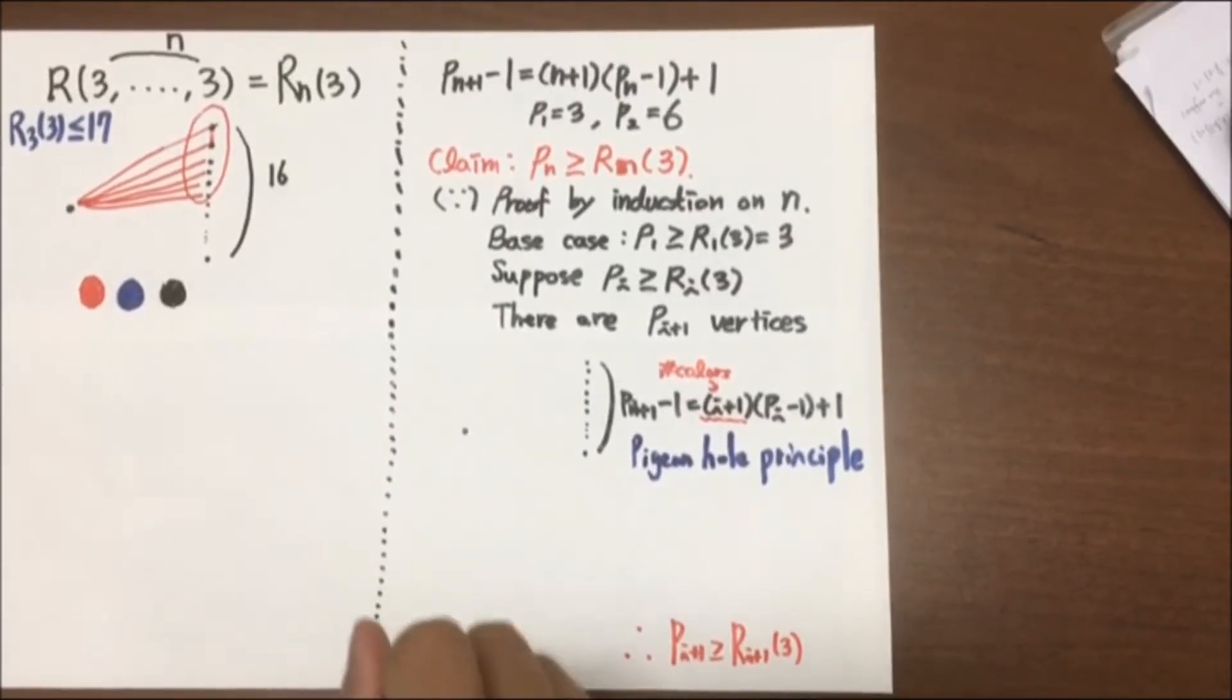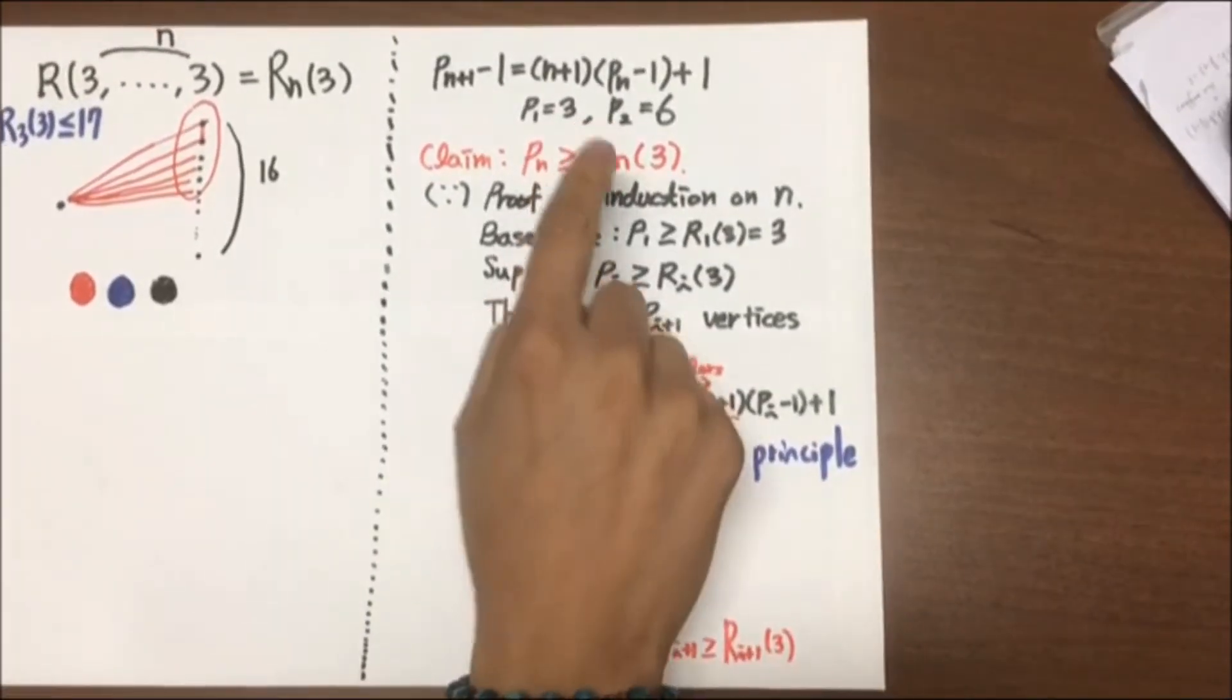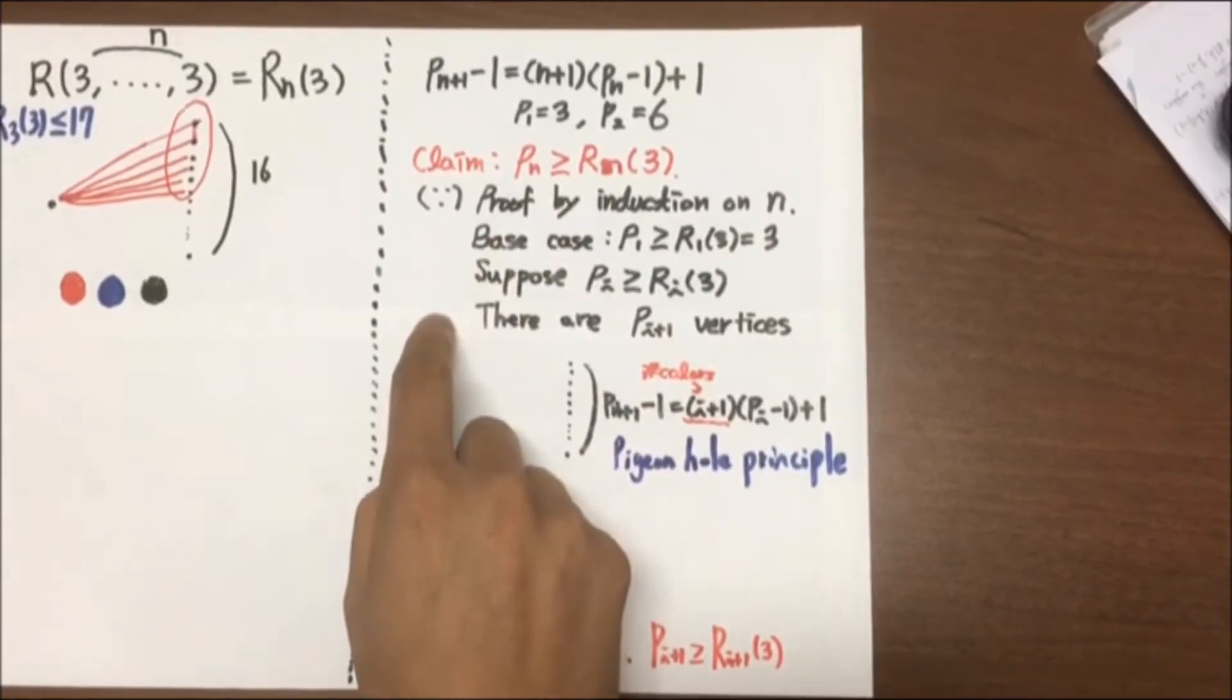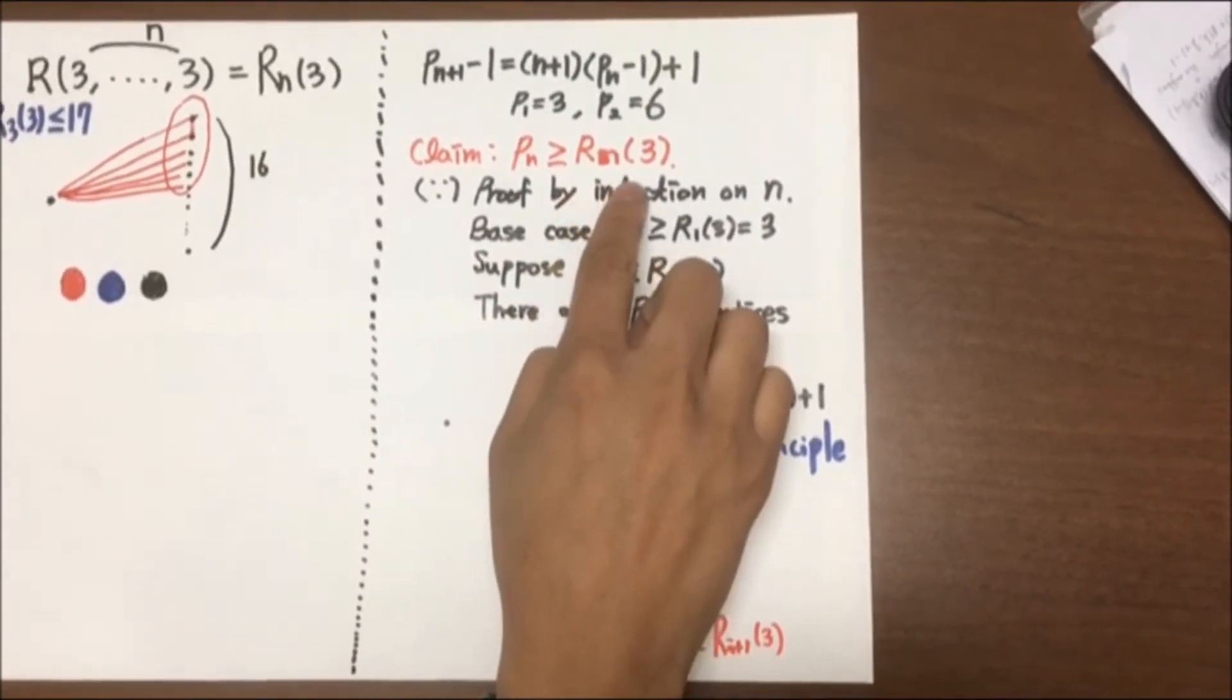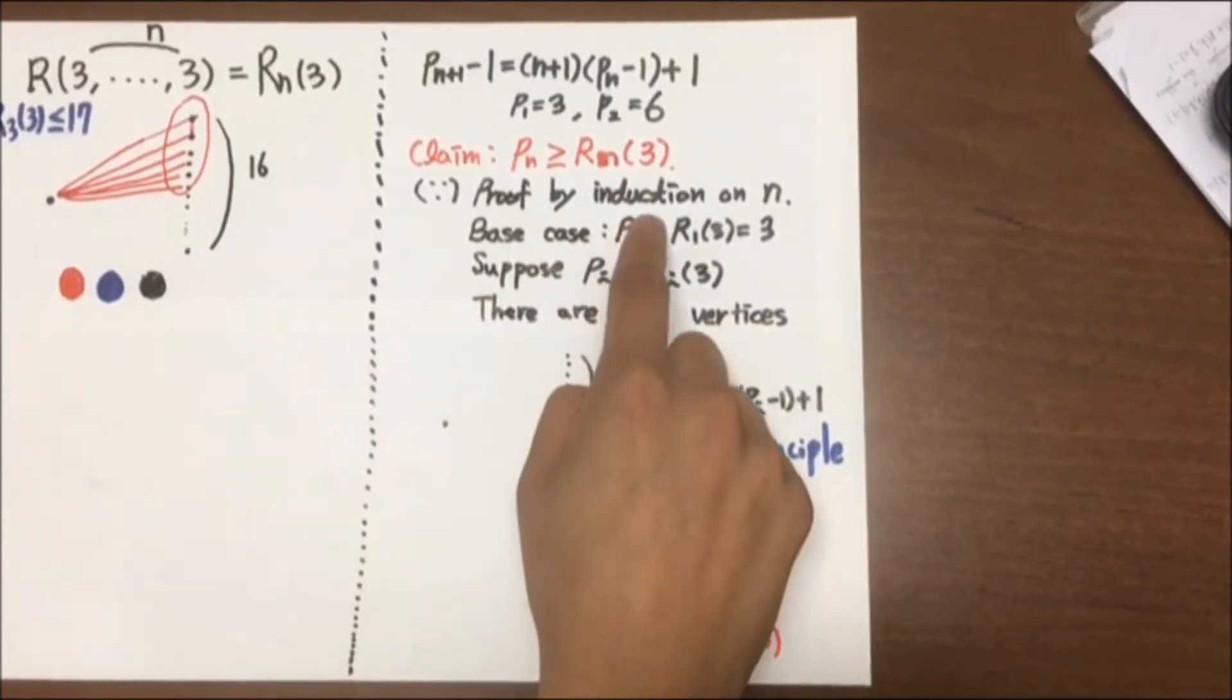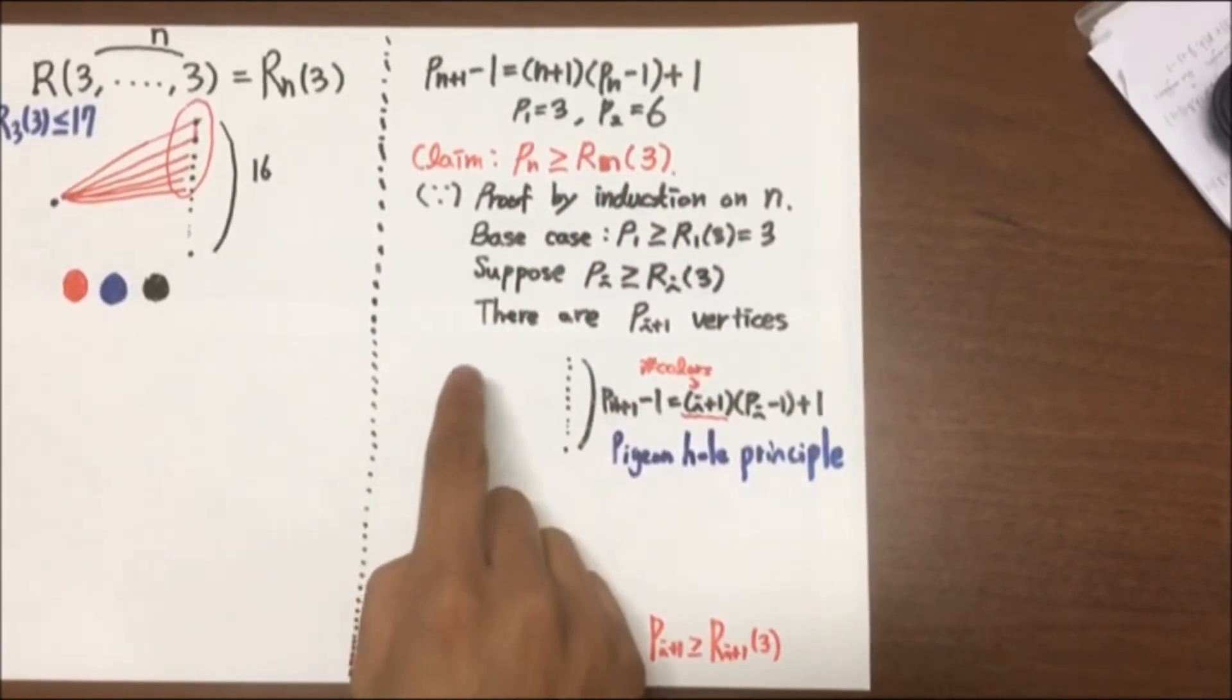Now, we define P_N with this recurrence relation and initial conditions. We claim here that P_N is greater than or equal to R_N(3). And we'll prove this by induction on N. Base case is trivial.